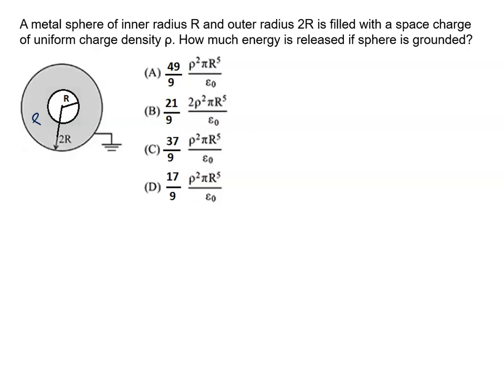I think all of you know if this is the metallic sphere, the whole charge, whatever charge is given, it will always reside on the outer surface. And as you connect to the ground, all energy will be dissipated. So what we will do, we will just calculate the energy in the initial situation when it is not grounded, and finally we will say all energy will be released when it is grounded.